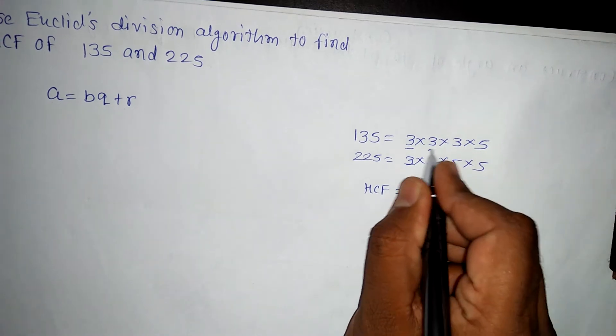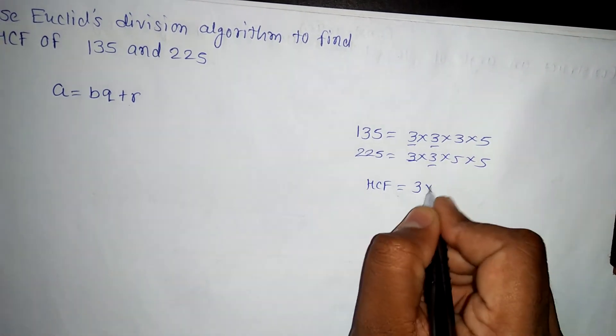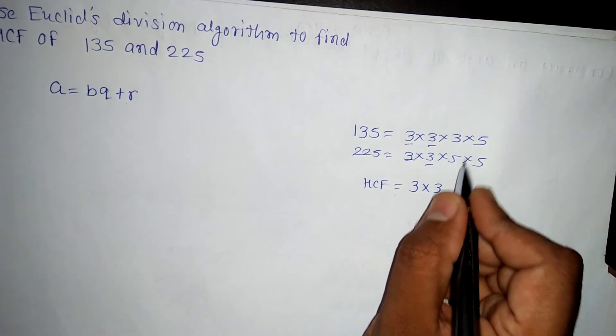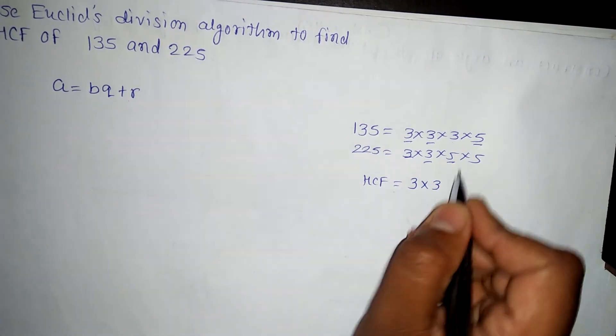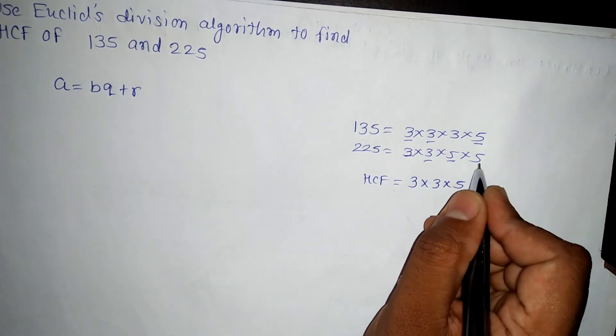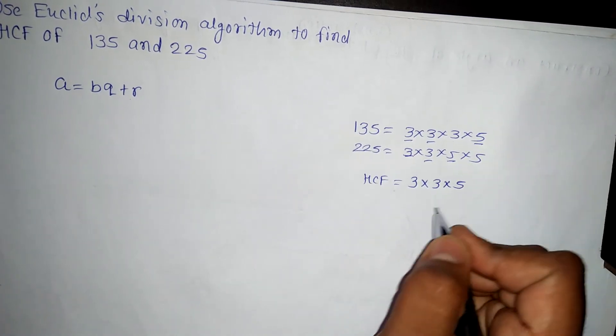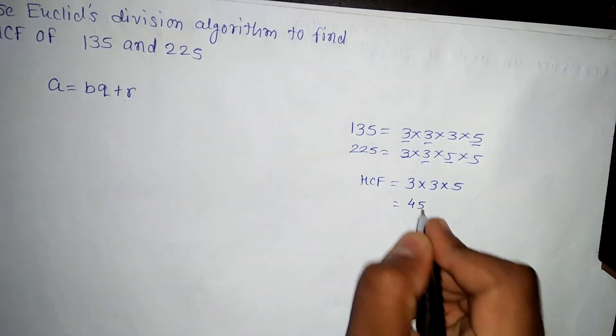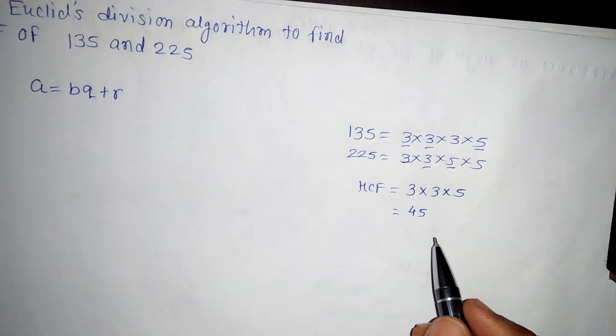Again 3, 3 comes once, that is 3. Here 3 but no 3 more, so I will not write it more. 5, 5, once it is repeated. Here it is 5 but no more 5 is there. So 5 times 3 is 15, times 3 is 45. HCF will be equal to 45. This is simple method to find out HCF.